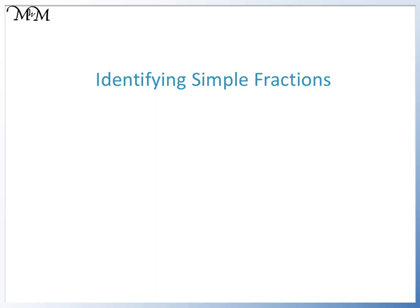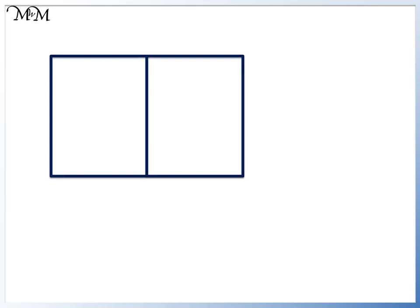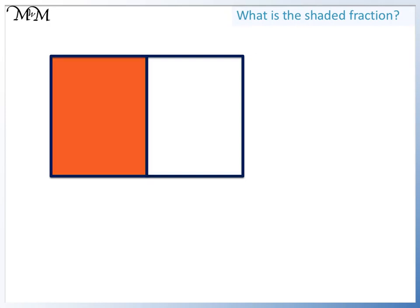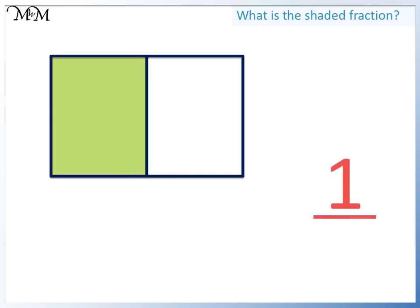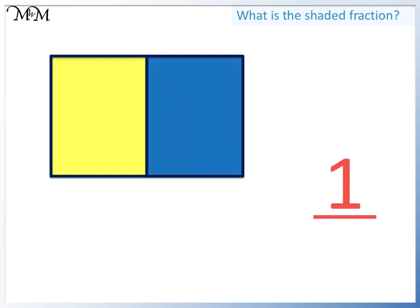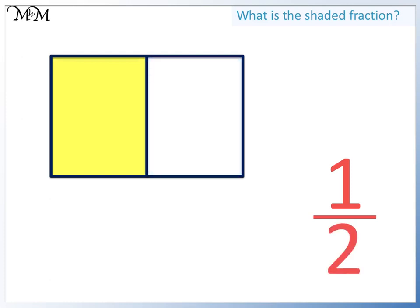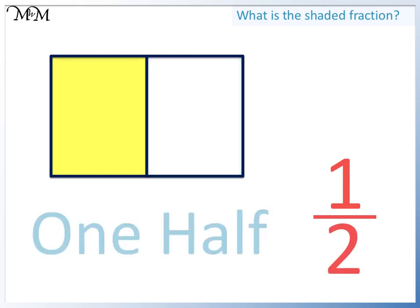Hi and welcome to our lesson on identifying fractions. Here is a rectangle divided into two equal parts. What is the shaded fraction? We have one out of two parts. This fraction is called one half. We say that one half of the shape is shaded in.